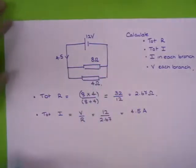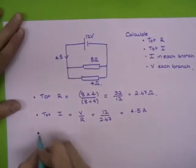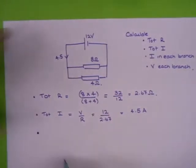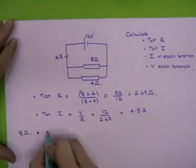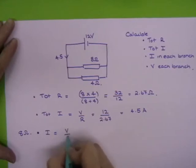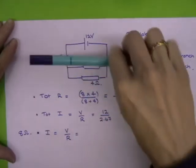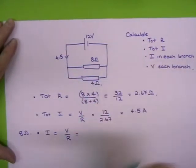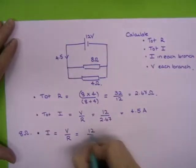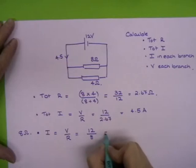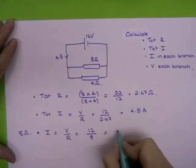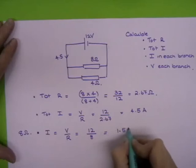But what we'll do is we'll do it as a calculation. V equals IR. So we'll do each branch on its own. So the 8 ohm branch first of all. I equals V over R. Because these are in parallel, they're each getting 12 volts from the battery. So it's 12 divided by the resistance 8. 12 over 8 gives you 1.5 amps.